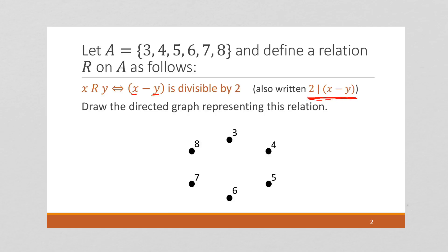3 minus 4, let's do 3 minus 3 is 0, and 0 is divisible by 2. So I have a self-loop.